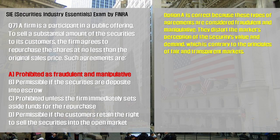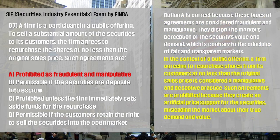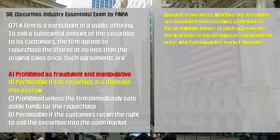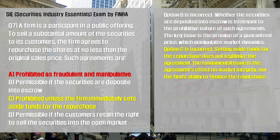Option A is correct because these types of agreements are considered fraudulent and manipulative. They distort the market's perception of the securities' value and demand, which is contrary to the principles of fair and transparent markets. A firm agreeing to repurchase shares from its customers at no less than the original sales price creates an artificial price support for the securities, misleading the market about their true demand and value. Option B is incorrect — whether the securities are deposited into escrow is irrelevant to the prohibitive nature of such agreements; the key issue is the promise of a guaranteed price. Option C is incorrect — setting aside funds for the repurchase does not legitimize the agreement, as the fundamental issue is the agreement's effect on market integrity.